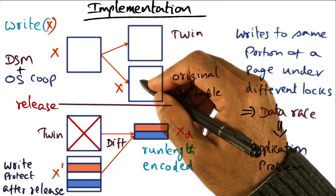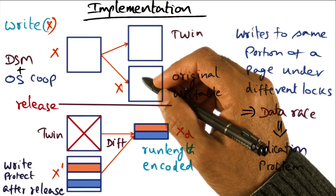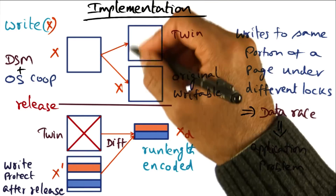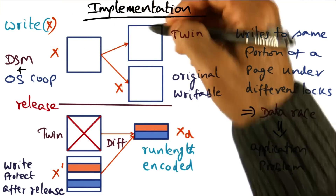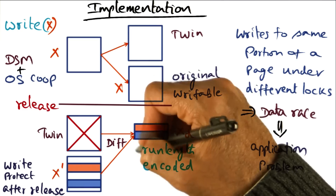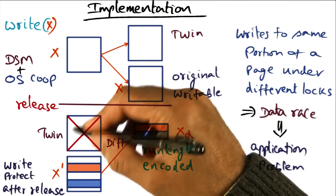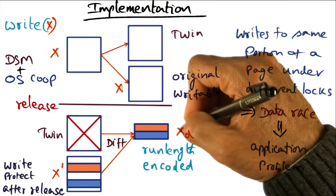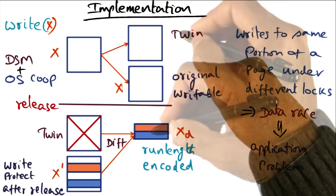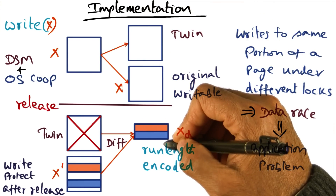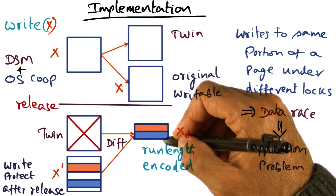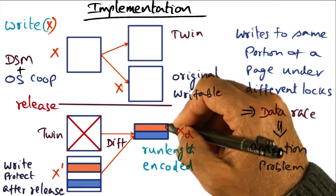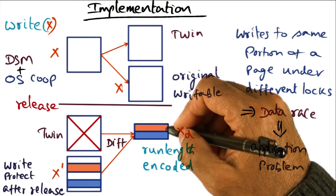One thing to notice is that there is space overhead for the creation of the twin at the point of a write — you have to create a twin. Then at the point of a release, you create a diff data structure, and of course you can get rid of the twin. So the twin and the diffs are all data structures of the implementation of distributed shared memory, and as time goes by there could be a lot of these diffs lying around in different nodes.